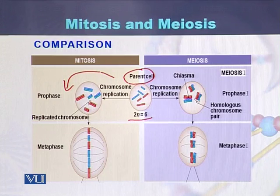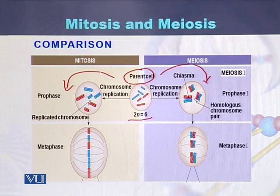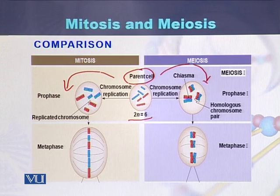In case of mitosis, DNA will be replicated and each chromosome will produce its sister chromatid. While in case of meiosis, after the duplication of the chromosomes, the chromosomes will be paired with each other to form homologous chromosome pairs.